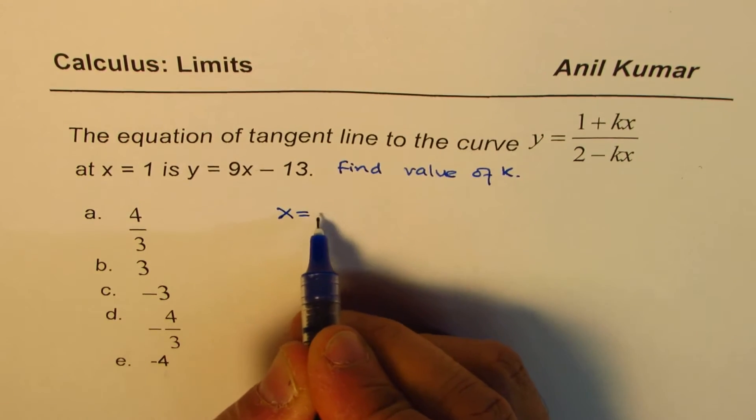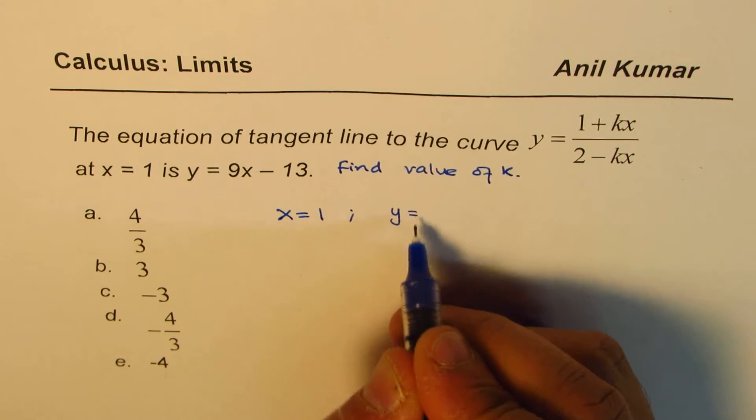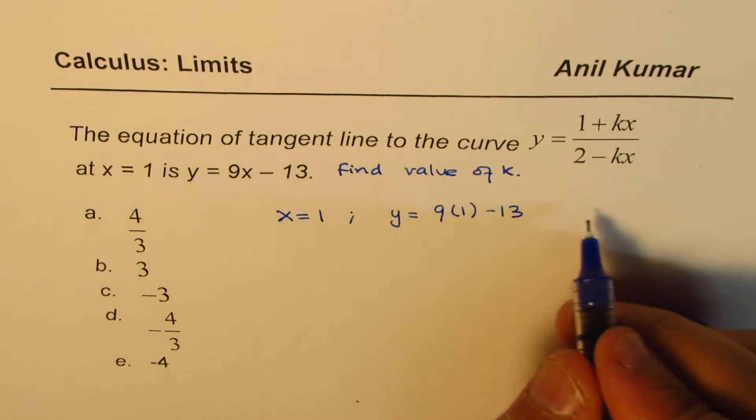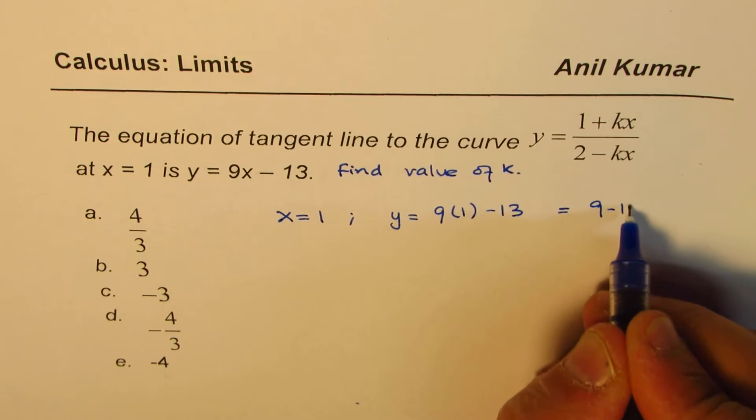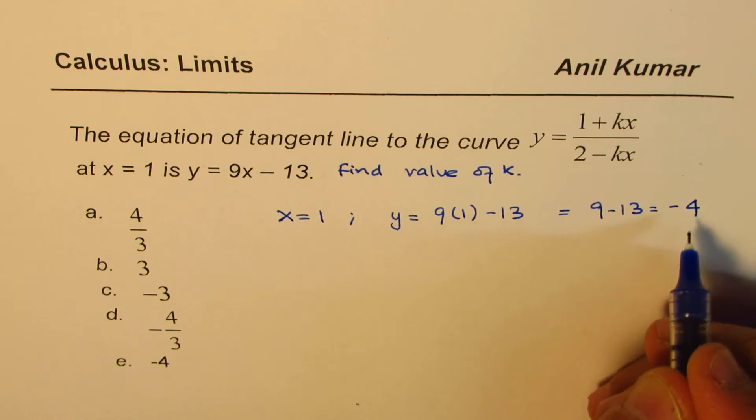What we are saying here is that x = 1. Then what is y? y = 9(1) - 13 = 9 - 13 = -4. Perfect.